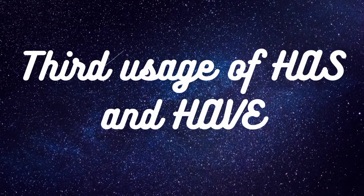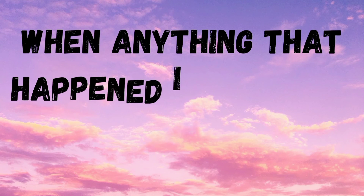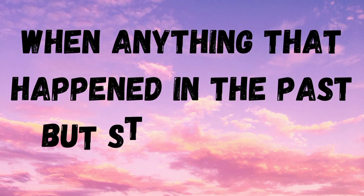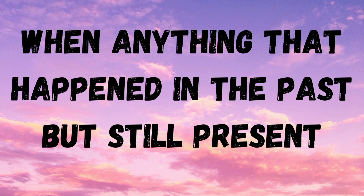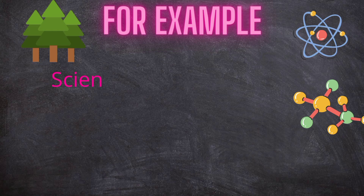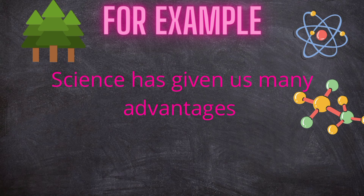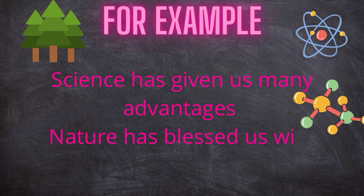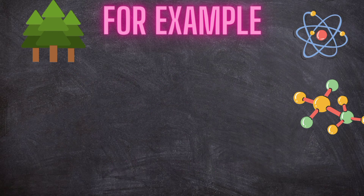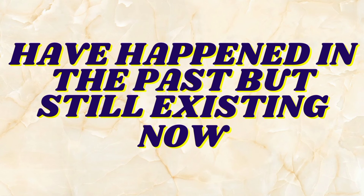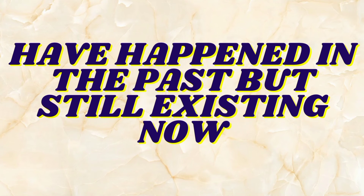The third use of has and have is when anything happened in the past but is still present. For example: 'Science has given us many advantages.' Second: 'Nature has blessed us with numerous boons.' So all these things happened in the past but are still existing now.